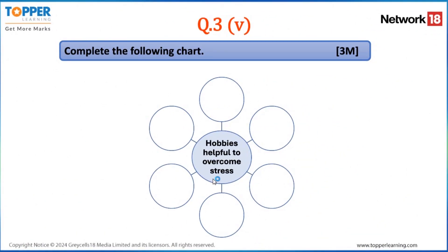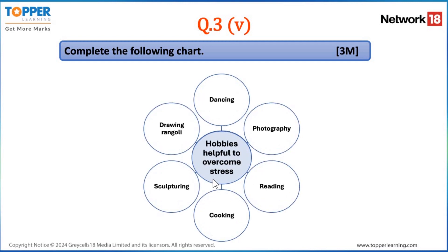Now that we have talked about the review and analysis of the paper, shall we solve one question from this paper? Let's take up question 3, sub question 5 — 'complete the following chart.' It was a 3-marker question where you have to list the hobbies helpful to overcome stress. There are 6 blanks. This is a very open-ended question where you can give any number of hobbies. For example: dancing, photography, reading, cooking, sculpturing, drawing, rangoli, or singing. Whichever hobby you feel helps you overcome stress can be mentioned. So this was a very scoring question.